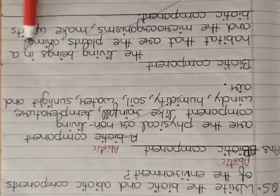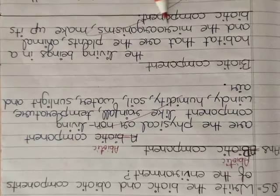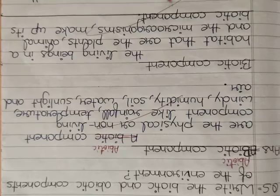Biotic component. The living beings in a habitat that are the plant, animal and the microorganism make up its biotic component.